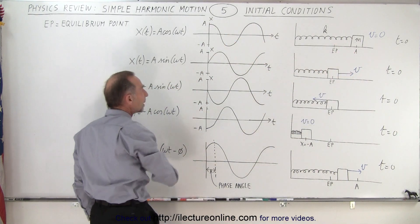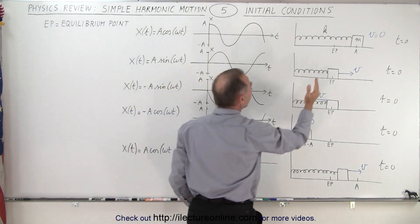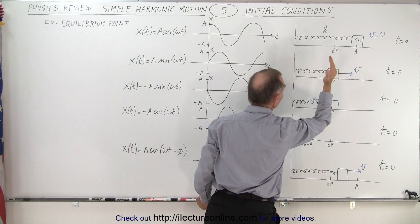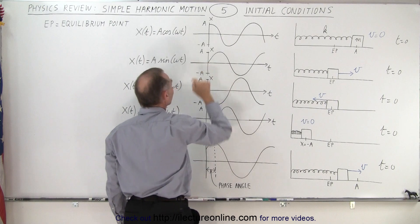In the second case we use A sine of omega t, because at that moment x equals zero at time equals zero, which gives you the sine function.